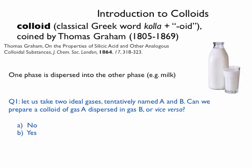So now let's see what your opinion is and let's see whether the clickers are going to work. There are two answers possible. Let's look at two ideal gases, gas A and gas B. Can we prepare a colloid of gas A dispersed in gas B, or gas B dispersed in gas A - can I make a colloid out of two ideal gases? Answer A is no, and answer B is yes. We have 31 responses: 65% says no, 35% says yes.